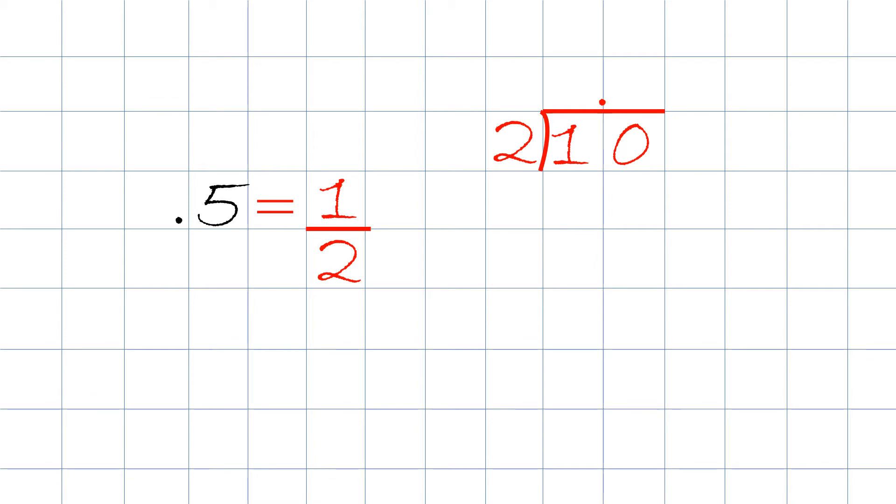Now, we know that 10 divided by 2 will be 5. We put the 5 right up here. We then take 5 times 2 will be 10. We put it right here and then subtract 10 minus 10 will be 0. So, 1 divided by 2 will be 0.5.